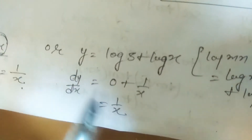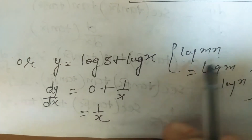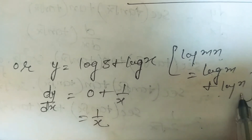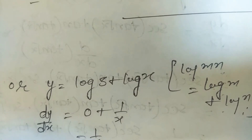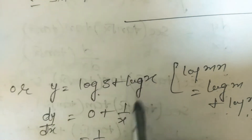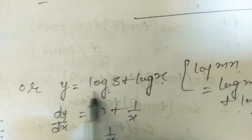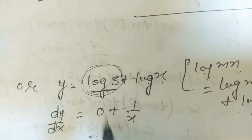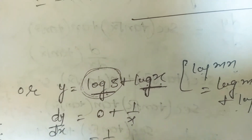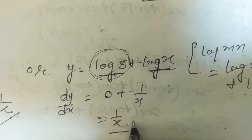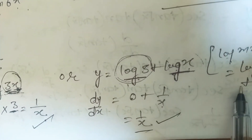Using the log law: log(mn) = log m + log n, we can write log(3x) = log 3 + log x. Derivative of log 3 (a constant) is 0, and derivative of log x is 1/x. So the answer is 1/x — consistent with the chain rule result. These log laws will be covered in exercise 5.3.